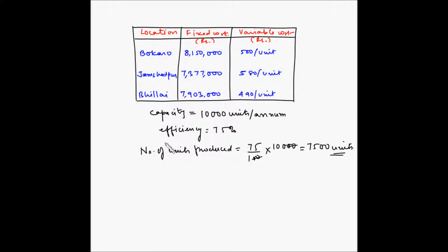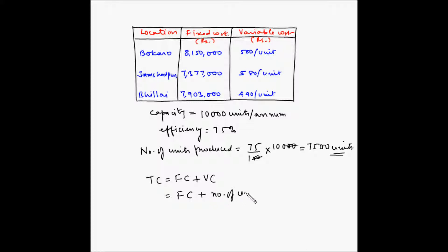We need to find out which location out of the three will provide the lowest total cost of production. Total cost is equal to fixed cost plus variable cost, where fixed cost is a constant and variable cost is the multiplication of the number of units produced and the unit variable cost.